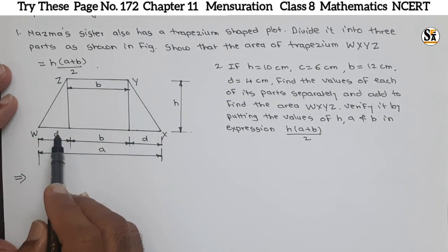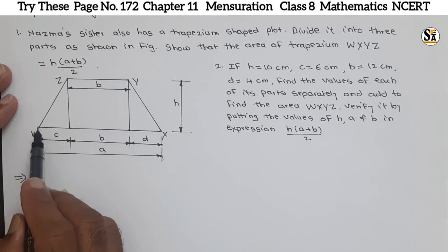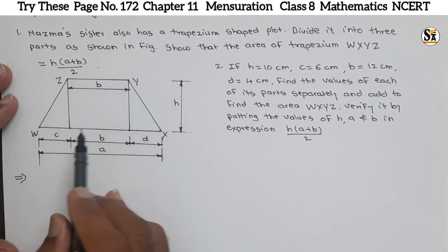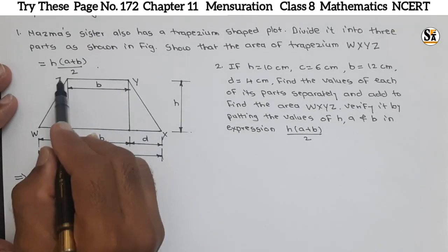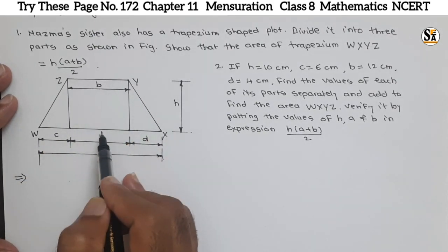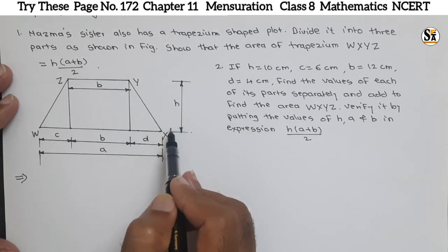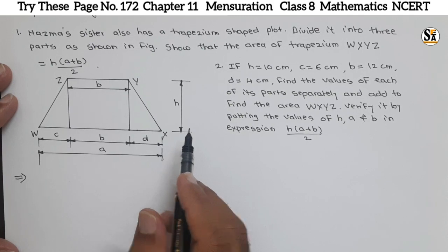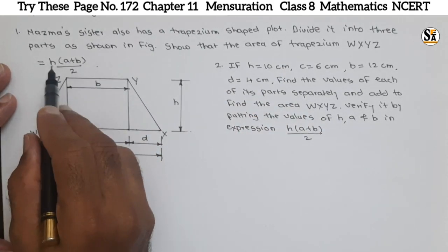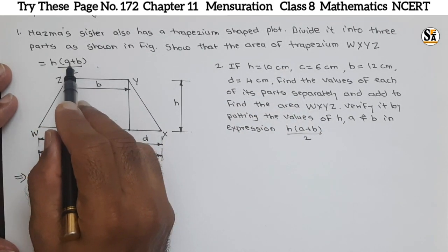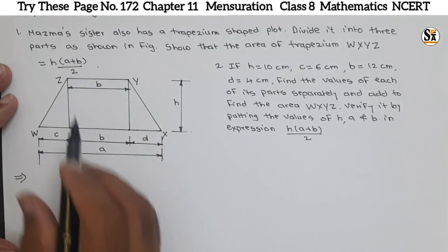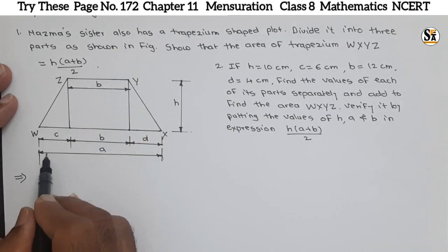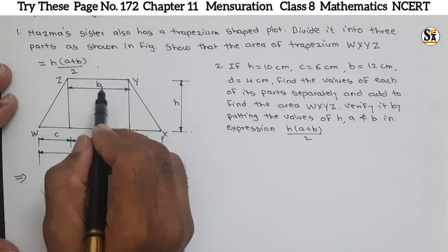This figure is given. This is the trapezium shape WXYZ. Why trapezium? Because these two sides WX and ZY are parallel sides, and there is a distance h between the two parallel sides. What is asked? Show that the area of trapezium is h into bracket (a plus b) divided by 2. What is a? One parallel side is a and another side is b.